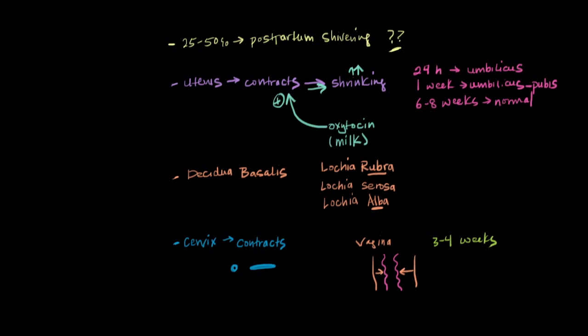Now finally, with regards to the return of ovulation and the return of menses, that usually occurs within six to eight weeks after delivery in women who don't breastfeed. So that's an important distinction. In women who do not breastfeed, menses and ovulation usually return within six to eight weeks.